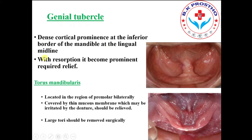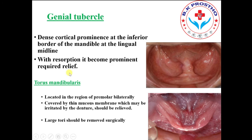The genial tubercle is a dense cortical prominence at the inferior part of the mandible at the lingual midline. With resorption, it becomes more prominent and requires relief, especially on the lingual side. In patients with atrophic ridges, it becomes even more prominent and requires relief.